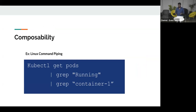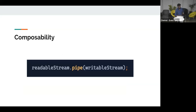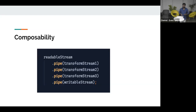Before we use these streams, we need to understand one more concept: composability. If you've used the Linux command line, you may have combined multiple commands together to create powerful pipelines. Similarly, you can combine multiple streams together to create a complex pipeline for solving data flow problems. Every stream object in Node.js exposes a function called pipe, which lets you connect multiple streams together. The data will flow automatically from the readable end to the writable end, and you can also connect multiple transform streams to create more complex pipelines.